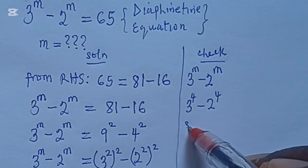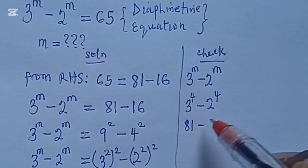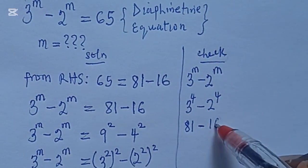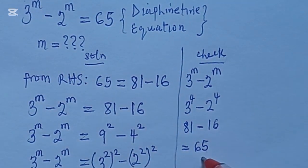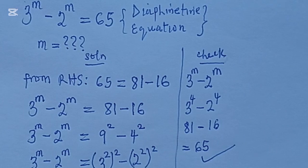3 to the power of 4 gives us 81. 2 to the power of 4 gives us 16, alright? And when you subtract that, you get 65 as expected, alright?